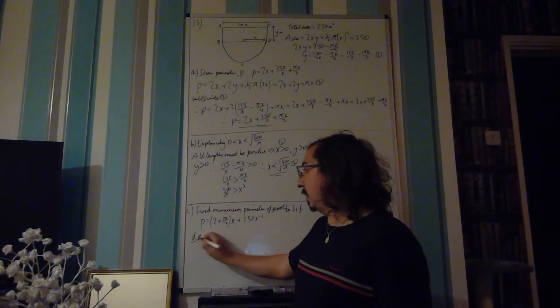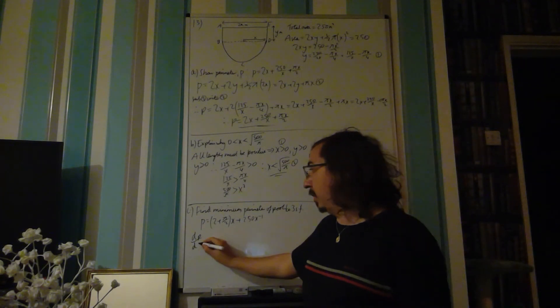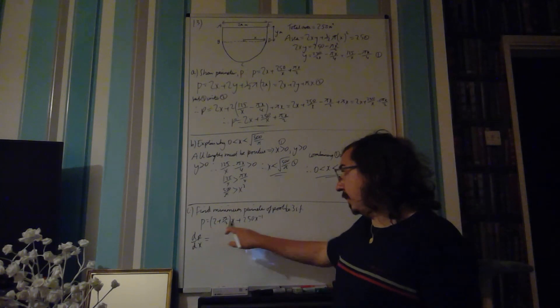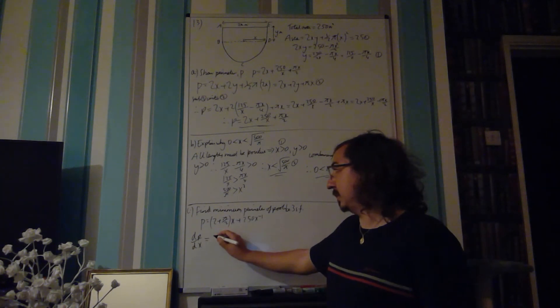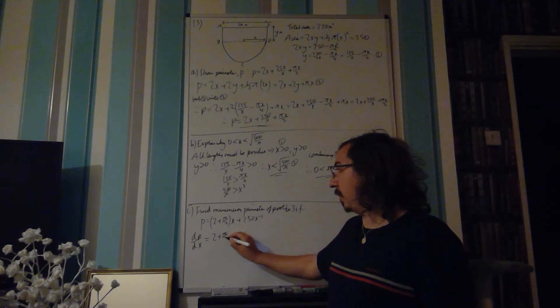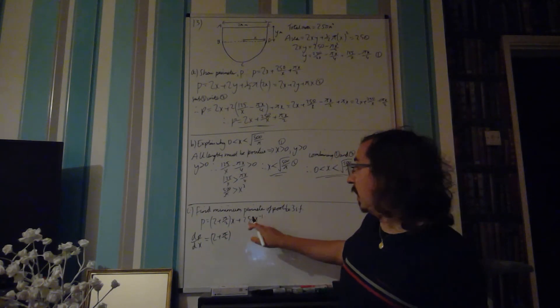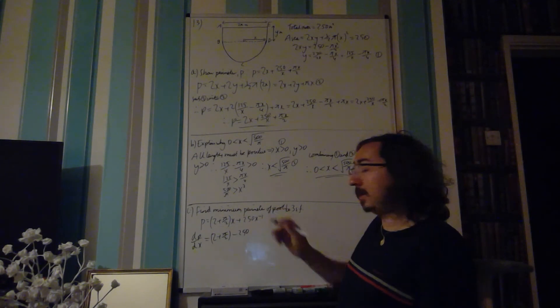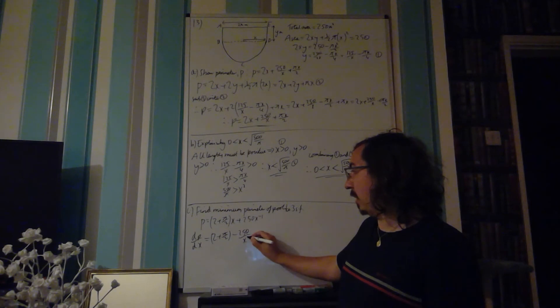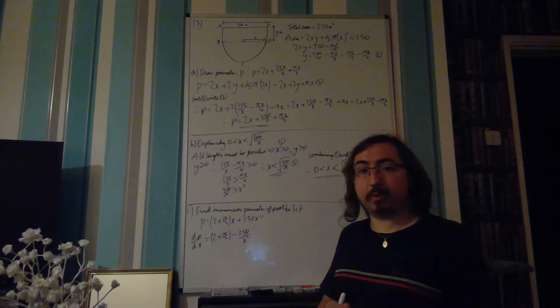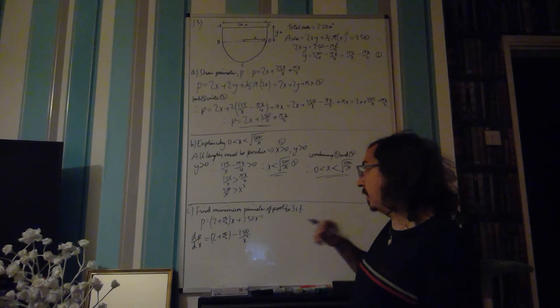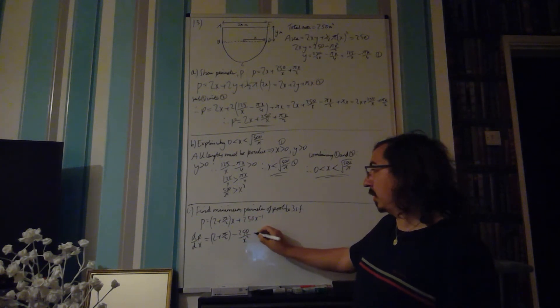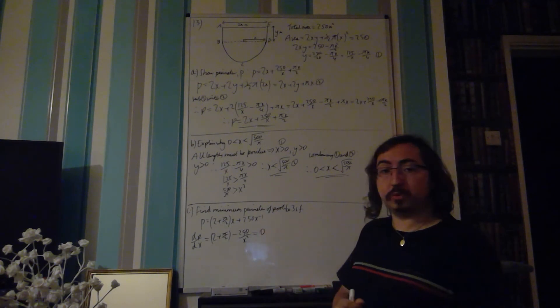I'm going to differentiate that function with respect to the variable x, because it's in terms of x. Well, if I differentiate the first term, the x just disappears. So we get 2 plus pi over 2. If I differentiate the second term, power to the front, so minus 250x to the minus 2. So I can rewrite that as over x squared. Now, because it's a minimum, it's a turning point, a turning value, I can say that that is equal to 0.